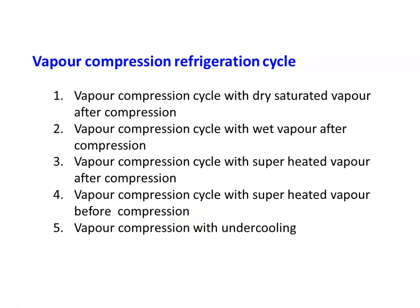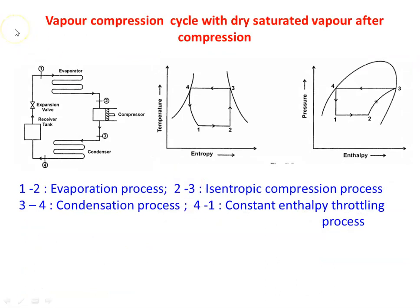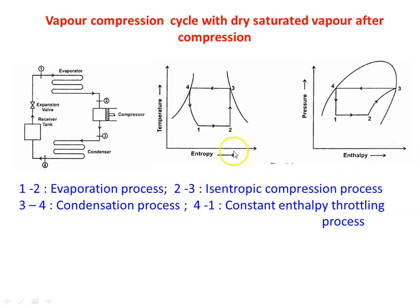The five vapor compression cycles are: (1) dry saturated vapor after compression, (2) wet vapor after compression, (3) superheated vapor after compression, (4) superheated vapor before compression, and (5) under cooling. In the first cycle — dry saturated vapor after compression — the layout uses evaporator, compressor, condenser, and expansion valve. Process 1 to 2 is evaporation, 2 to 3 is isentropic compression, 3 to 4 is condensation, and 4 to 1 is constant enthalpy throttling. Point 3 lies on the saturated vapor line in the temperature-entropy diagram.